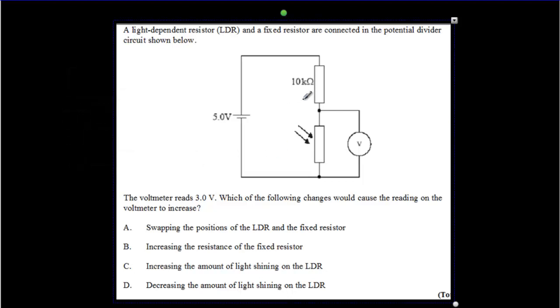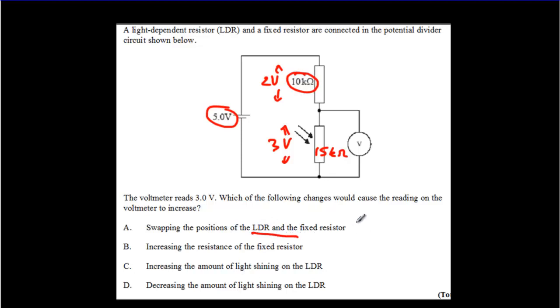This one's very similar. We can actually figure out, because we've got 5 volts here and we've got 10 kiloohms here, and we know this is 3 volts. Therefore, this has to be 2 volts across here. And it also means that this must be a 15 kiloohm resistor. So if we were to swap the positions of the LDR and the fixed resistor, that's not going to work. So as soon as we see this signal here, we should be thinking about increasing or decreasing the amount of light. So if we're going to increase the voltage here, we're going to have to increase that resistance. And that means we're going to have to decrease, once again, the amount of light shining on the LDR.